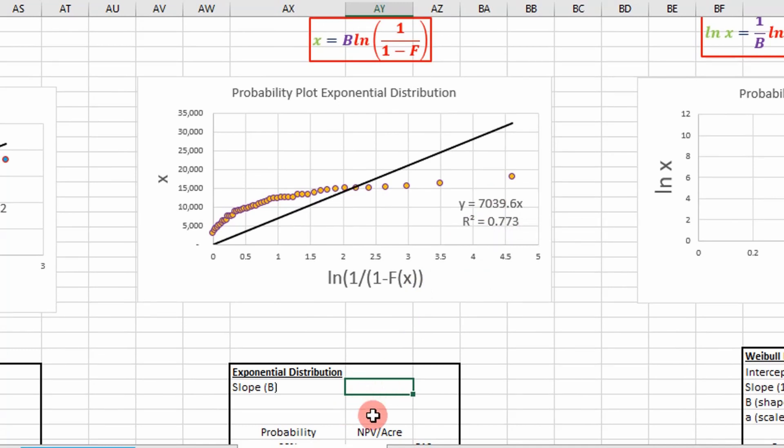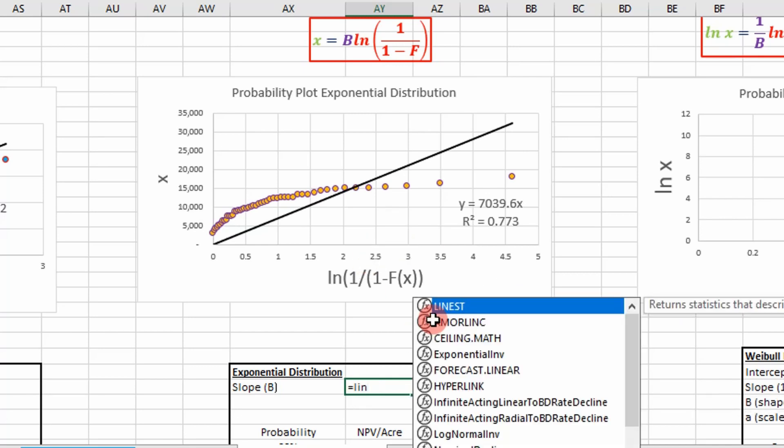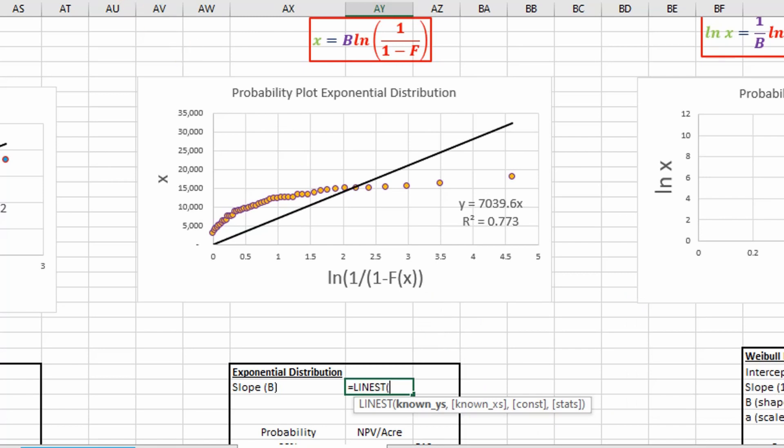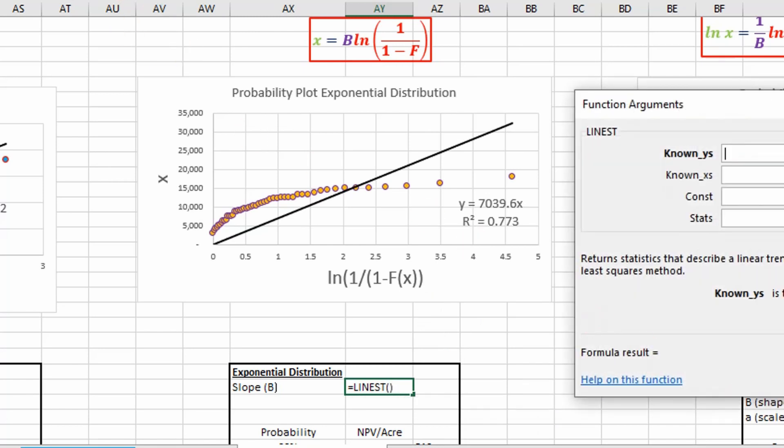I like to calculate it just to make sure that this result agrees with the calculated result. It's one of those double checks I like to do. You can use the LINEST function to get that value. Essentially, it's going to take our known y's and known x's.